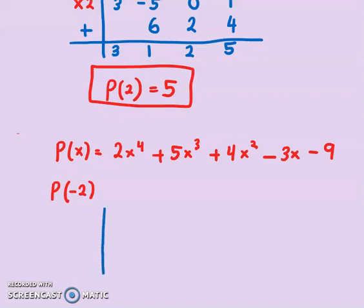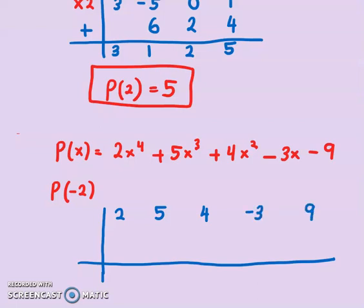You can substitute x equals to -2 into this equation and find the final answer, or you can use Horner's scheme. Let's use Horner's scheme. The highest degree is 4 here. So we have 2, next is 5, 4, -3, and -9.